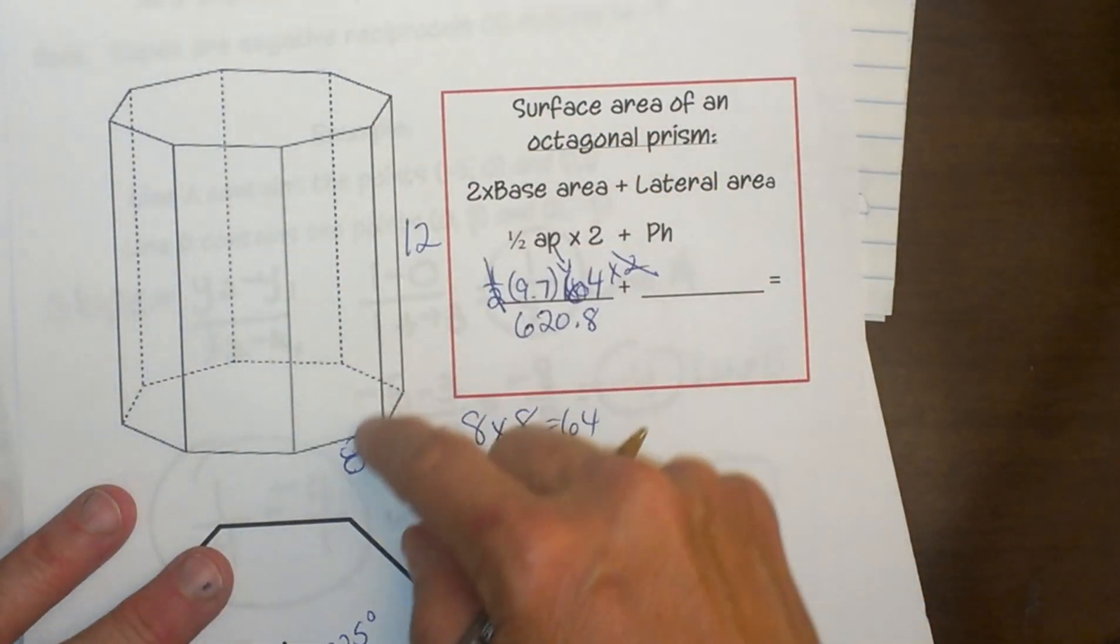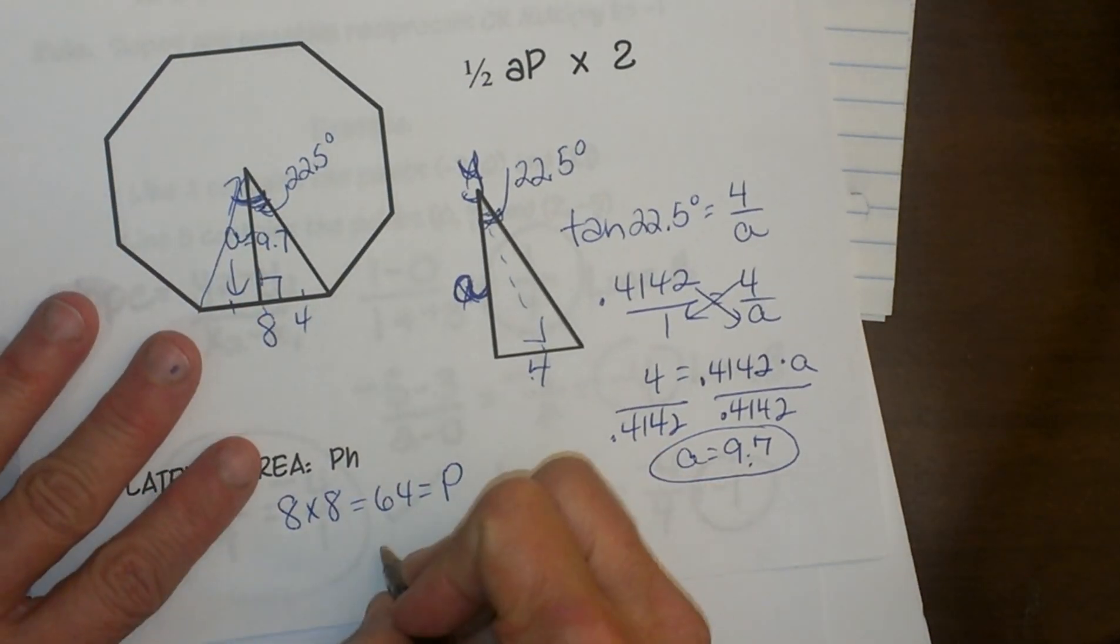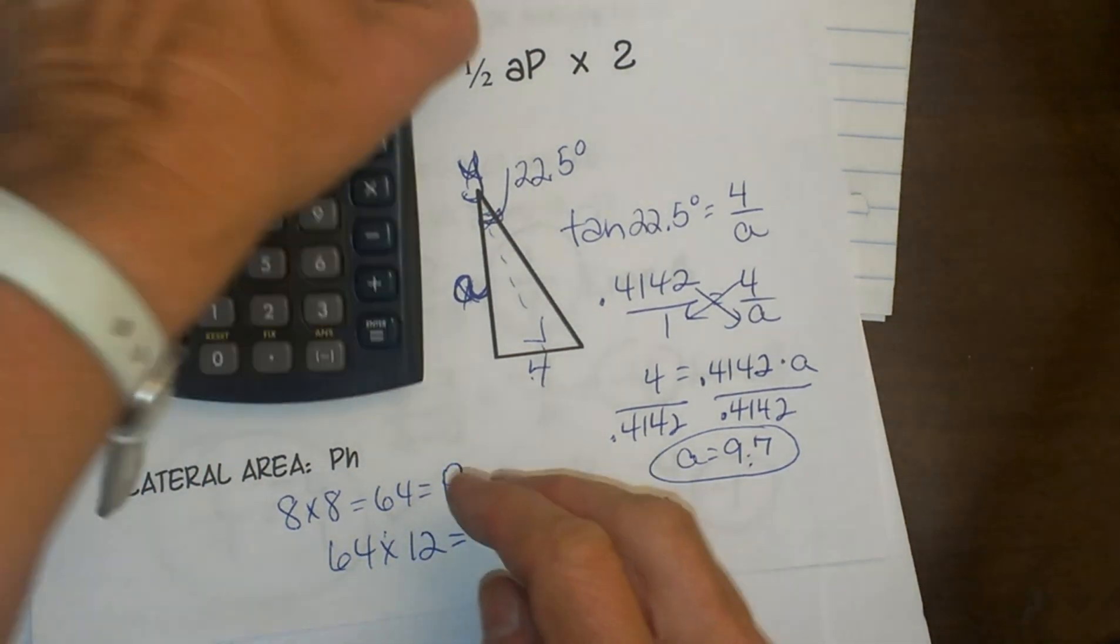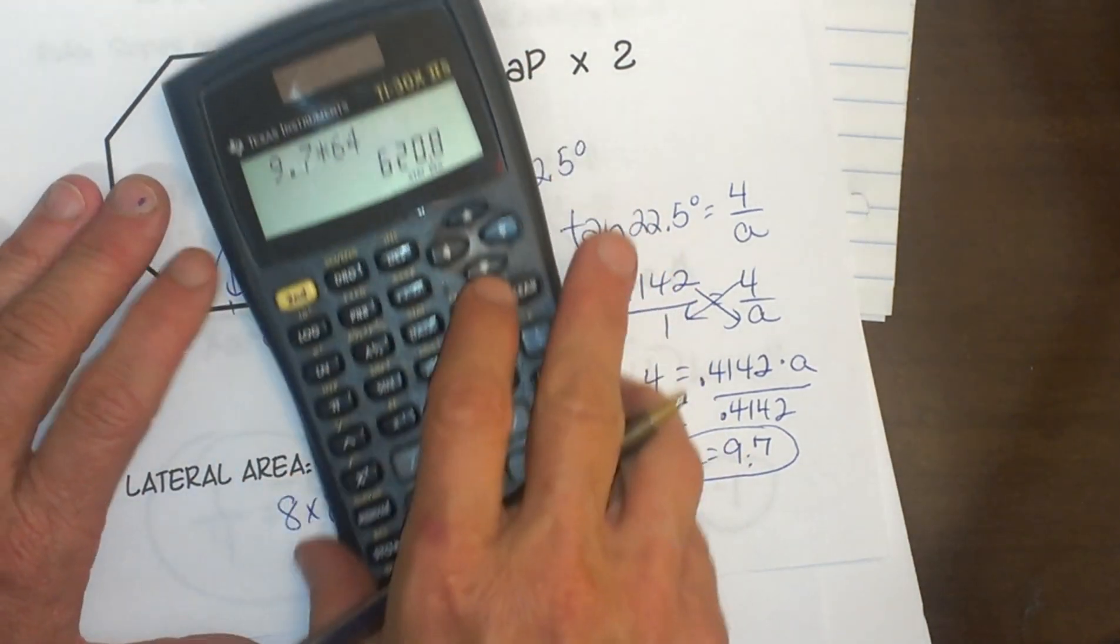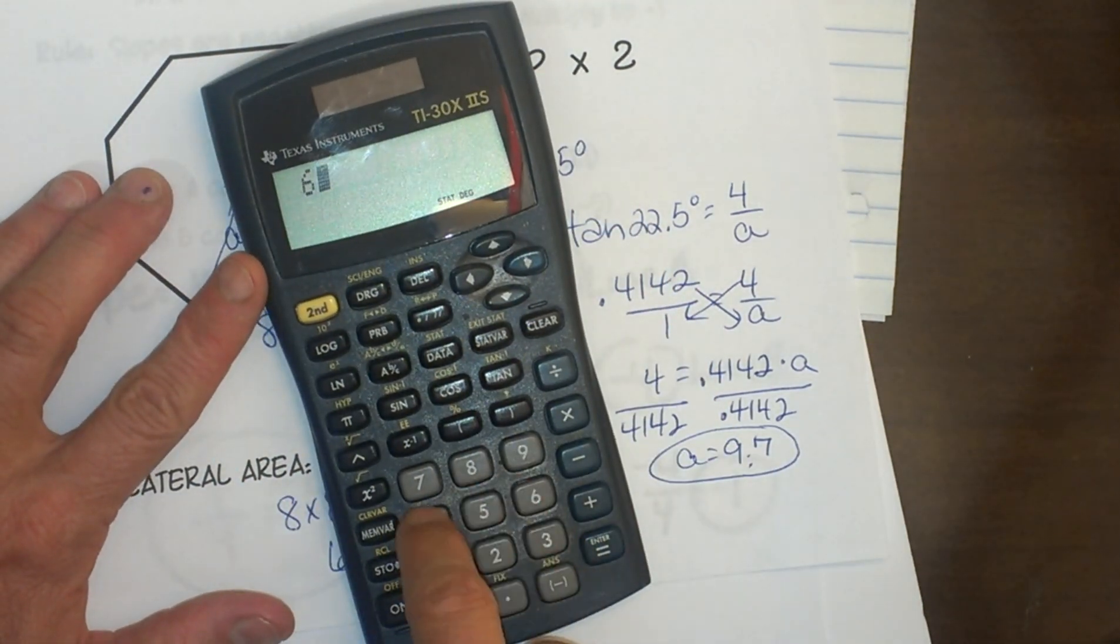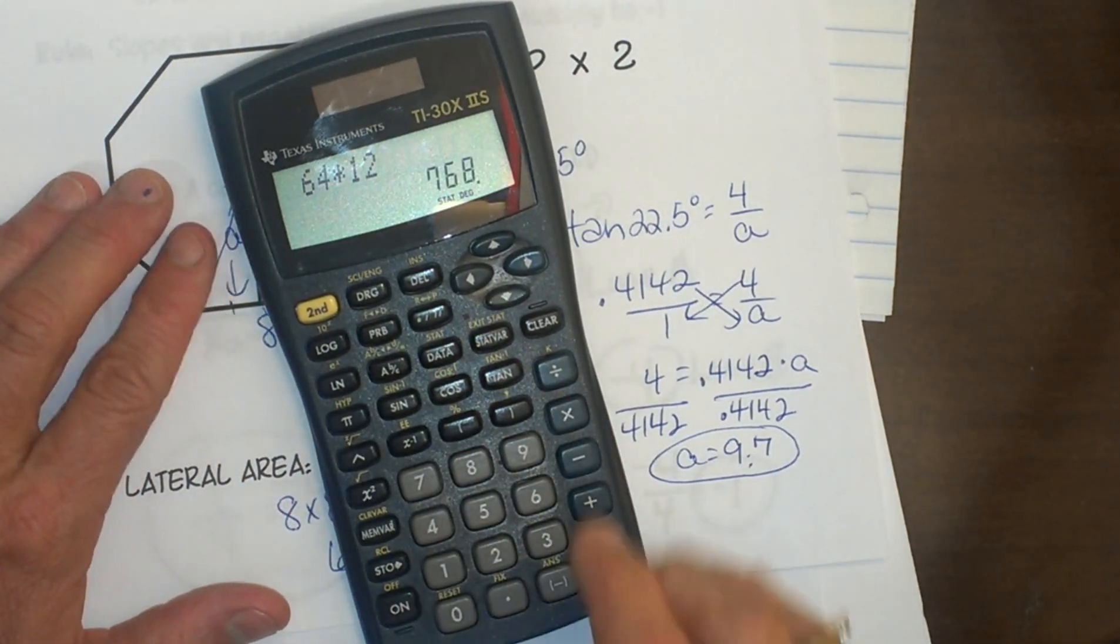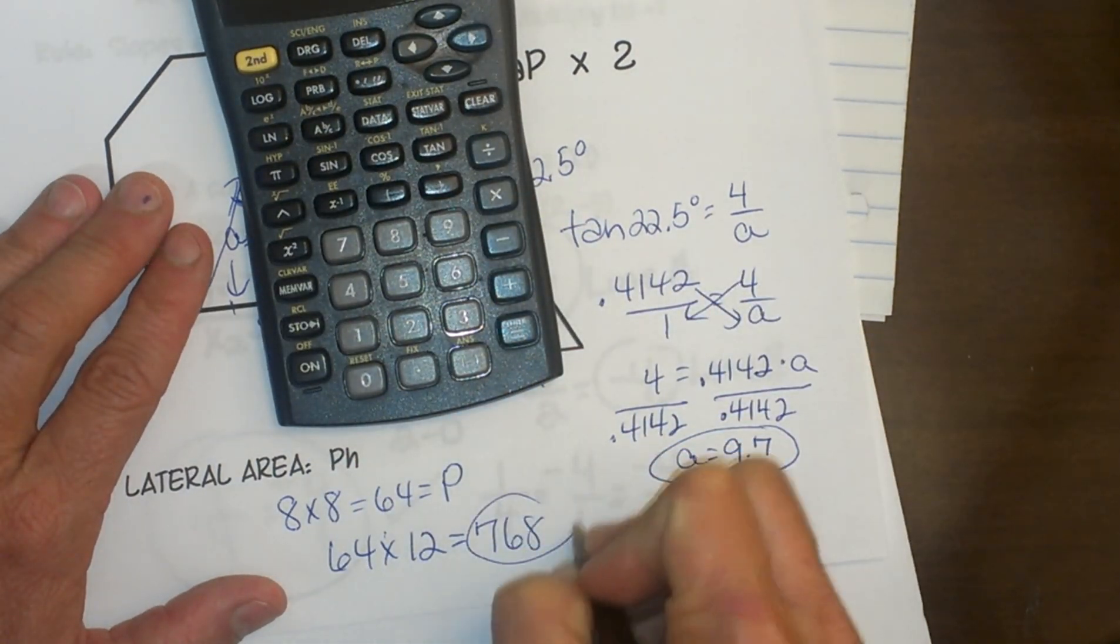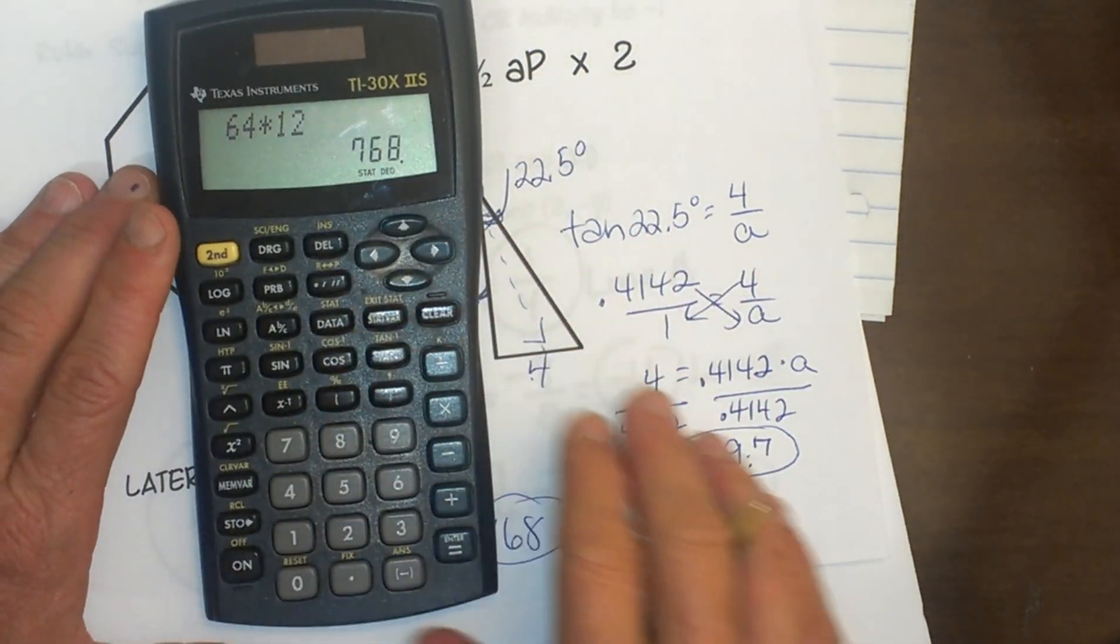Now what was the height of this prism? Well, the height is 12. So I'm just going to take 64 times my height of 12, and that is going to give me my lateral area. So you can see the lateral area is the easy part. 64 times 12, that is going to give me 768 for my lateral area.